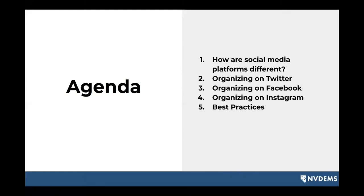In this training, we're going to talk about a couple of things. We'll go over how our social media platforms are different from each other. We'll talk about what it looks like to use Twitter to organize, what it looks like on Facebook, and then on Instagram, and we'll walk through some best practices. In each of those sections, we'll also talk about how you get set up with an account on those platforms if you aren't already familiar.